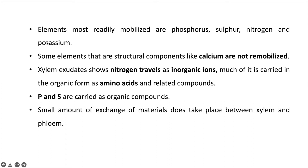Some elements create structural components of the plant — for example, calcium — which once deposited are not remobilized. Xylem exudate also shows that nitrogen travels in the form of inorganic ions, but mostly it also travels in the form of organic compounds such as amino acids and related compounds. Phosphorus and sulfur also travel in the form of organic compounds, and sometimes there is exchange of minerals between xylem and phloem.